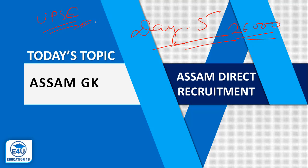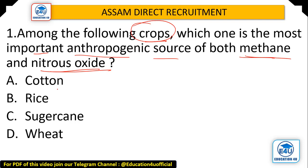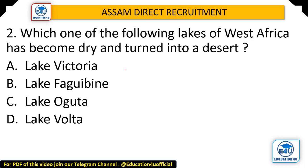Question: Among the following crops, which one is the most important anthropogenic source of both methane and nitrous oxide? Options: Cotton, Rice, Sugarcane, and Wheat. The answer is Rice — Number B. Rice cultivation generates the most methane and nitrous oxide in the agriculture industry.